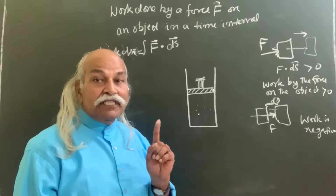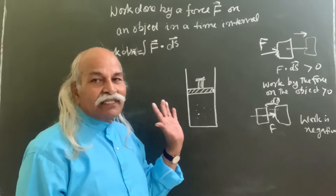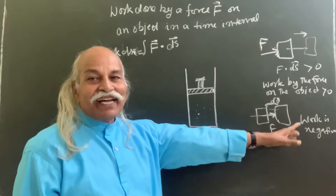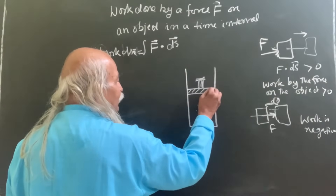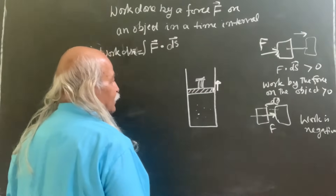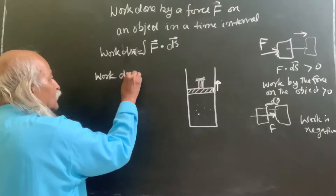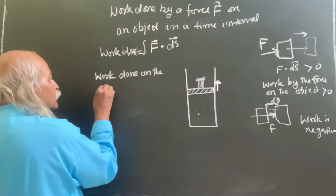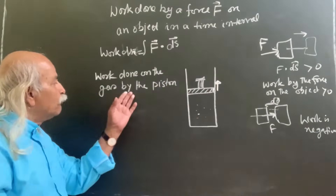Now you decide which work you want: work done by the gas on the piston, or work done by the piston on the gas, and whether it is expanding or being compressed. Then you decide what is positive and what is negative according to these equations and definitions. Suppose this gas is expanding — the piston is pulled up, going in the upward direction. Let us say we want work done on the gas, by the piston — that means by the force exerted by the piston.